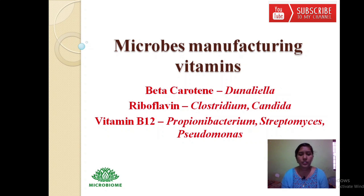Riboflavin, called vitamin B2, is produced by Clostridium and Candida. It is essential for the formation of two coenzymes: flavin mononucleotide (FMN) and flavin adenine dinucleotide (FAD). Vitamin B12 is produced by Propionibacterium, Streptomyces, and Pseudomonas.